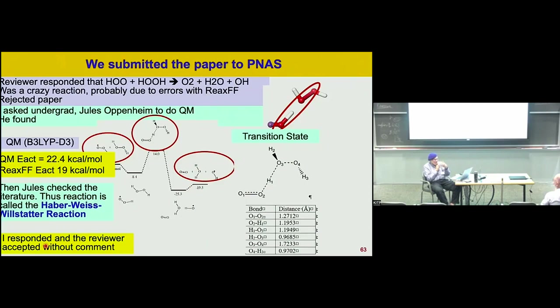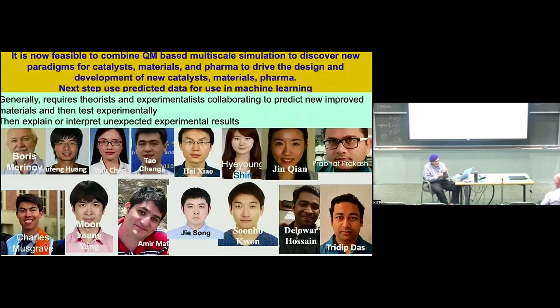We're at a point where we can combine quantum mechanics multi-scale simulations. If you do quantum mechanics on modest systems — up to maybe two or three hundred atoms, for a hundred picoseconds or so — we can then train reactive force fields that can do systems with 10 nanometers, that's ten thousand atoms, or maybe 100 nanometers, that's ten million atoms. So we can cover that range and look at the real phenomena at the scale of 10 to 100 nanometers.